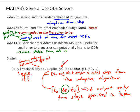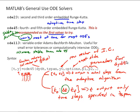Similar to what we had before, we have Y0 is our row vector of initial conditions. Options, we're going to talk about on the next slide. This is how we set some options for the solver. And then we can pass parameters through the solver for our DYDT function to use to evaluate.